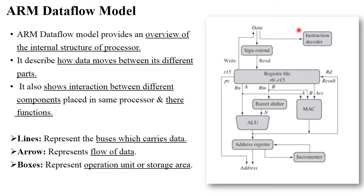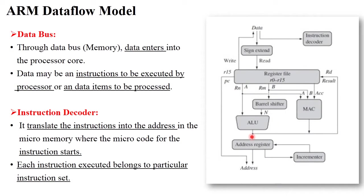I will explain each and every component in detail. The ARM processor data flow model always starts with the data bus. The data bus is generally used to carry different instructions or different data items, and sends this data to the processor for performing different operations.